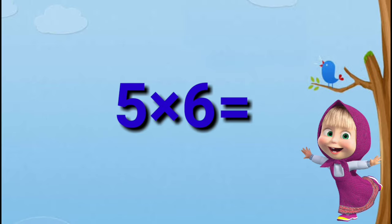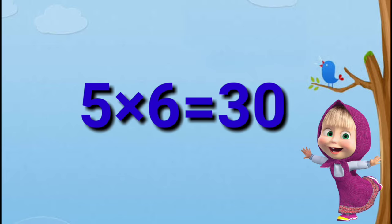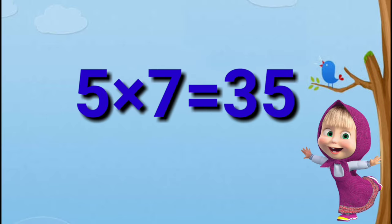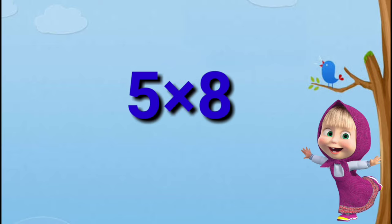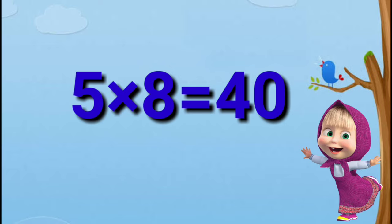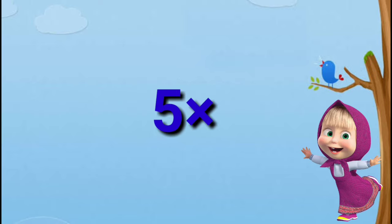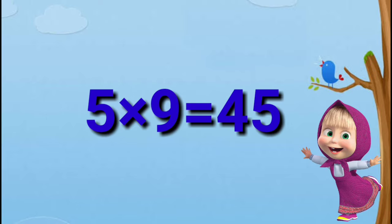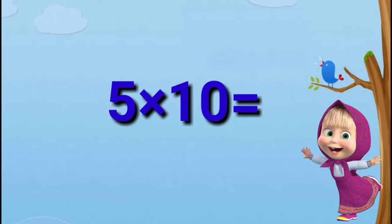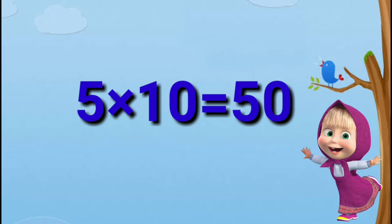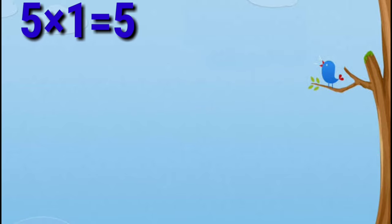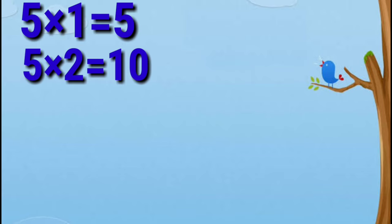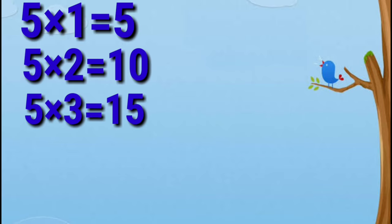Five sixes are thirty. Five sevens are thirty-five. Five eights are forty. Five nines are forty-five. Five tens are fifty. Five ones are five. Five twos are ten. Five threes are fifteen.